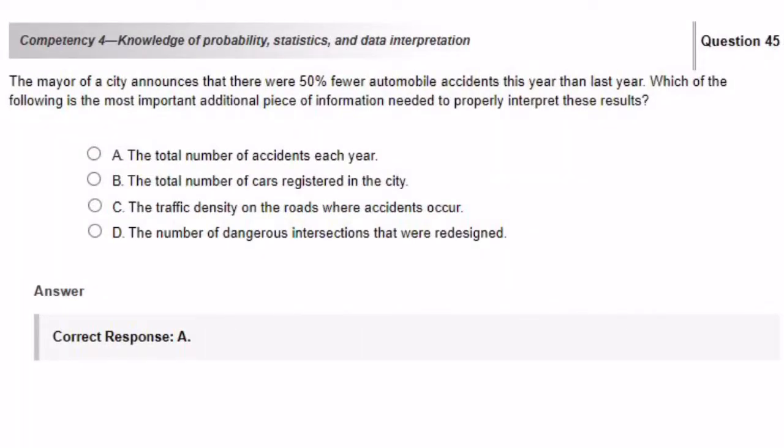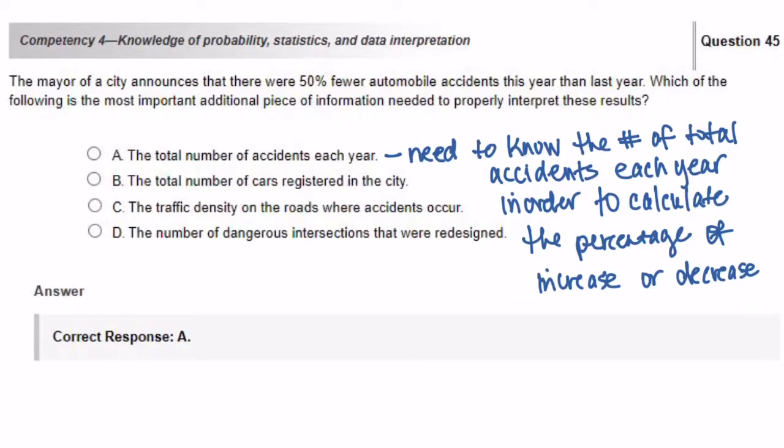The mayor of a city announces that there were 50% fewer automobile accidents this year than last year. Which of the following is the most important additional piece of information needed to properly interpret these results? The mayor needs to know this information in order to calculate the percent of increase or decrease from year to year. So answer choice B, the total number of cars registered in the city. Answer choice C, the traffic density on the roads where accidents occur. Answer choice D, the number of dangerous intersections that were redesigned. These three answer choices would not give any important information when calculating the automobile accidents.